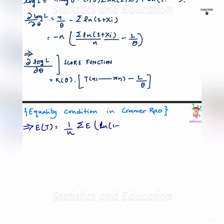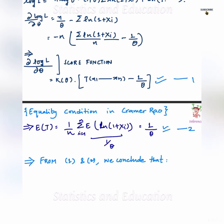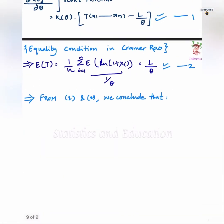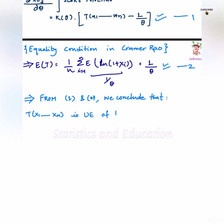Expectation of T is equal to 1 upon n summation expectation of log 1 plus Xi, since theta's value is equal to summation of log 1 plus Xi upon n. From d log L upon d theta, T is an unbiased estimator for 1 upon theta, where T is equal to summation log 1 plus Xi upon n. And T is already a sufficient and complete estimator, which implies that T is a UMVUE for 1 upon theta.